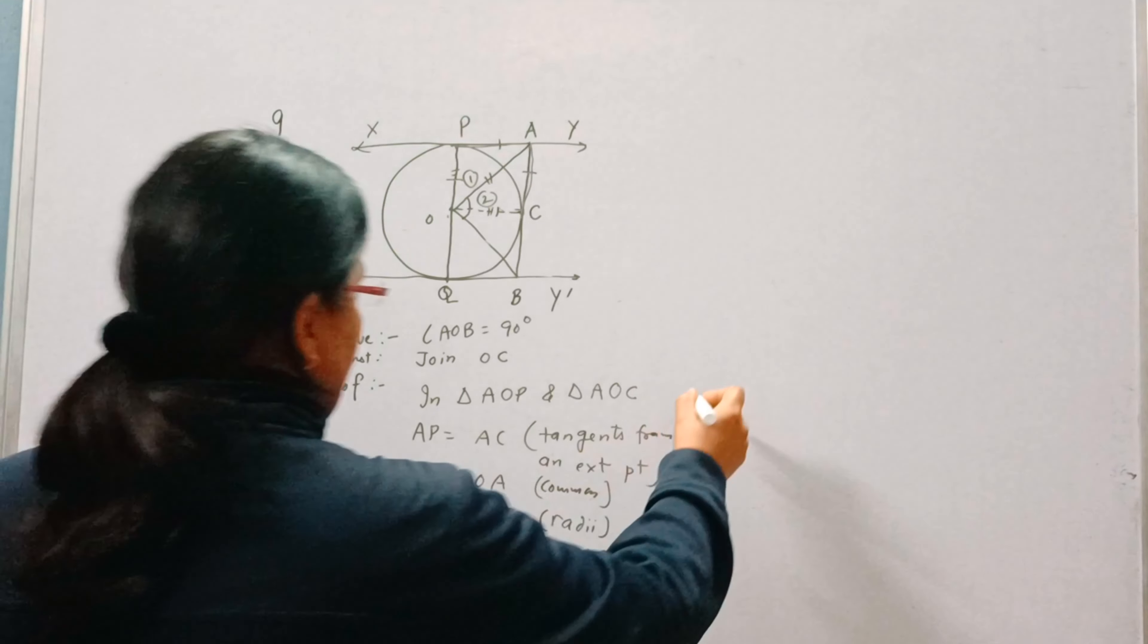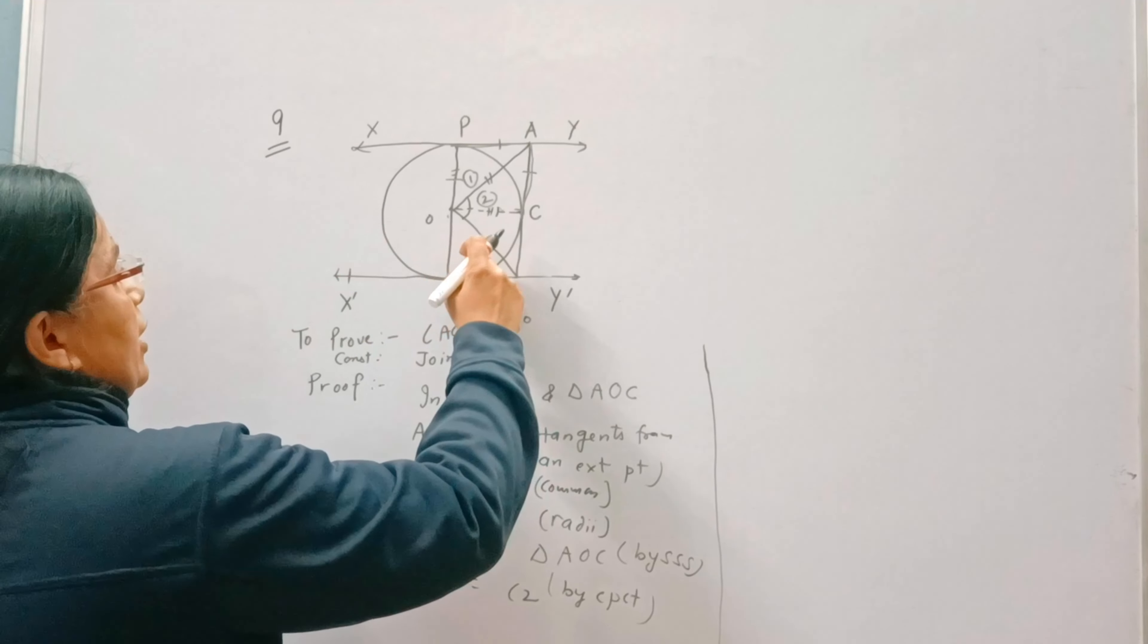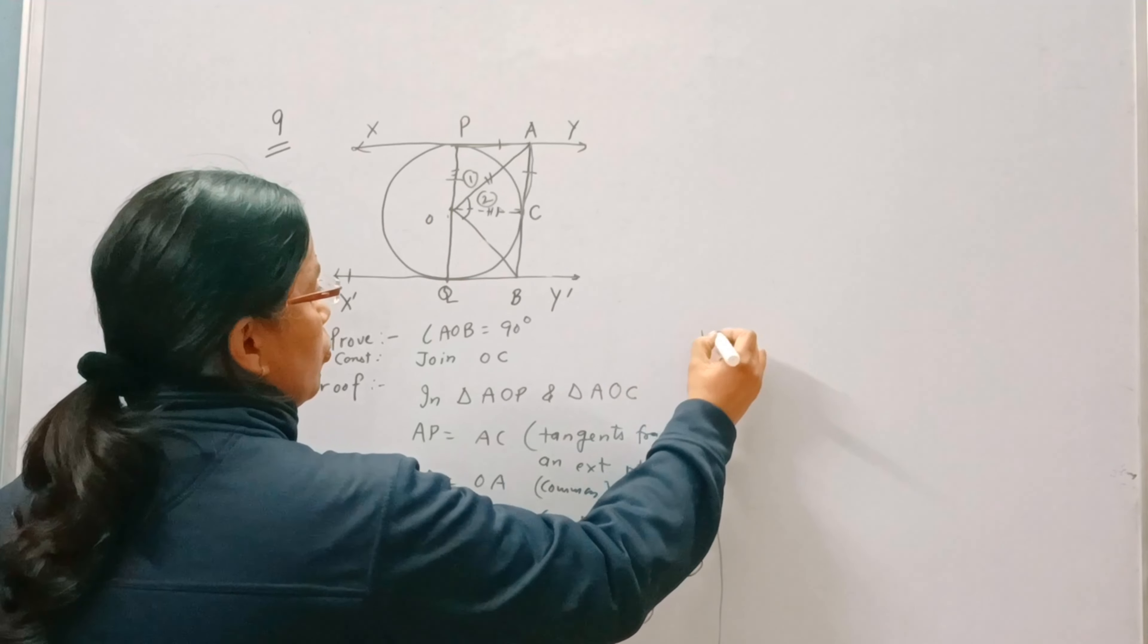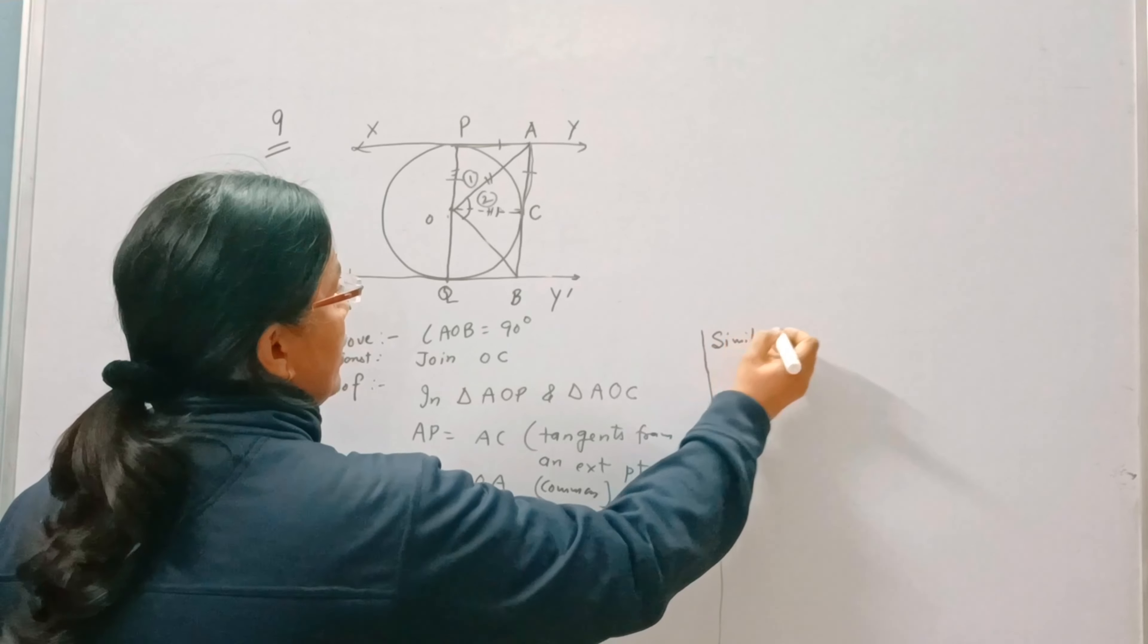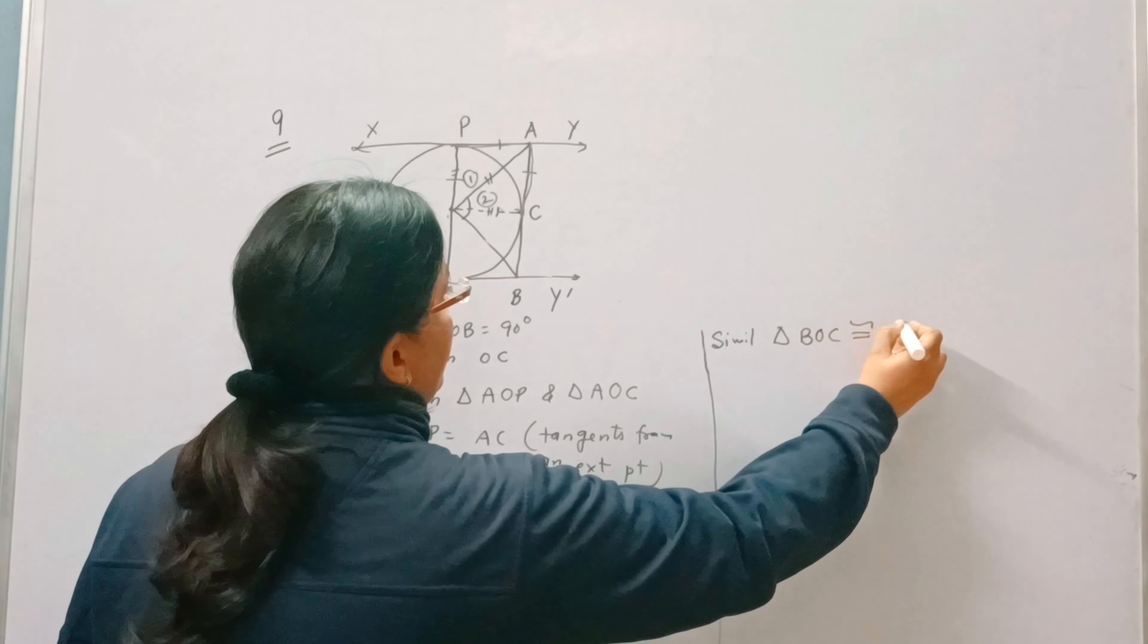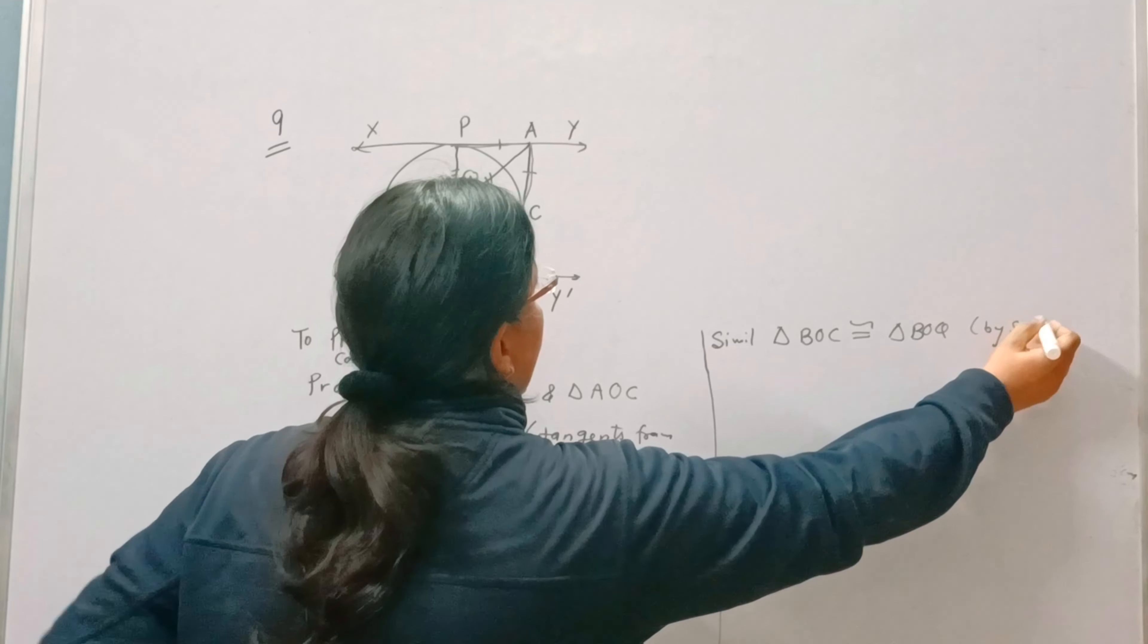Now in the same manner we can make these two triangles boc and boq congruent. Similarly we can make them congruent. Triangle boc is congruent to triangle boq. Again by side, side, side.